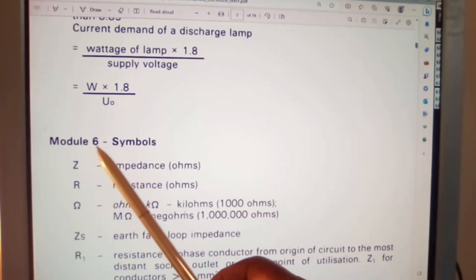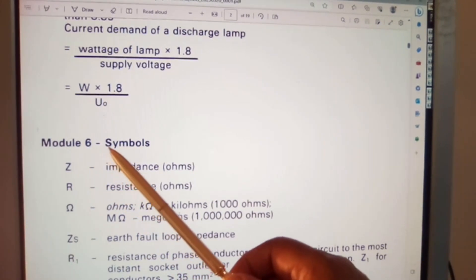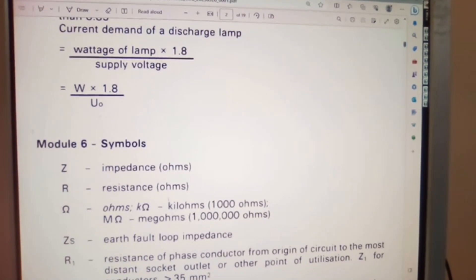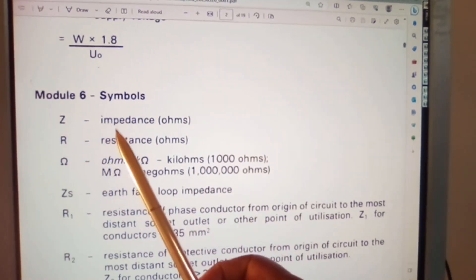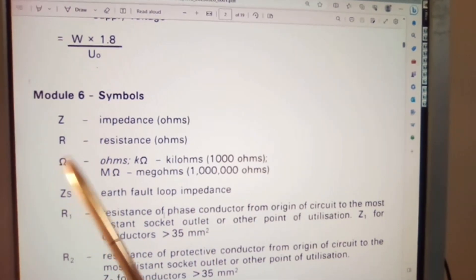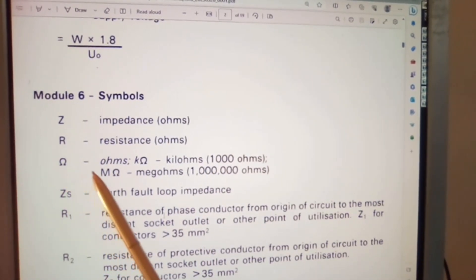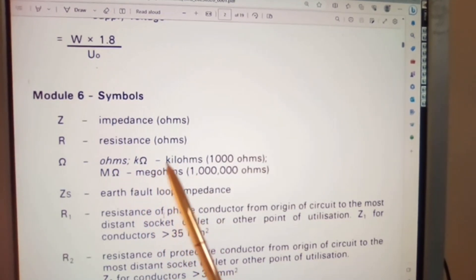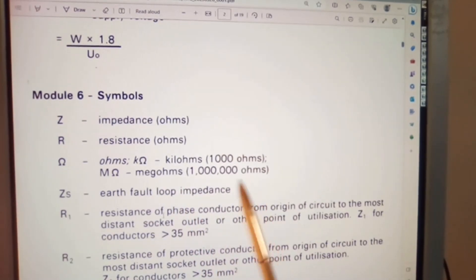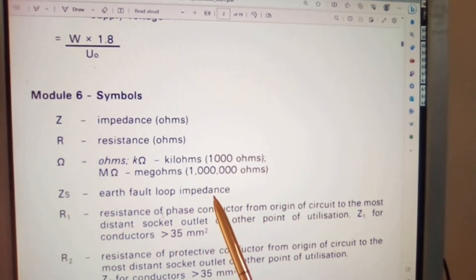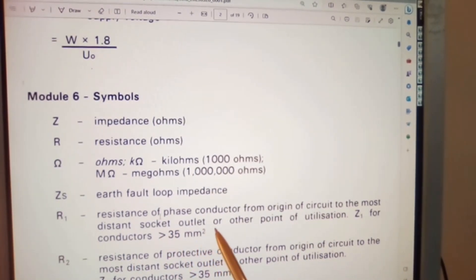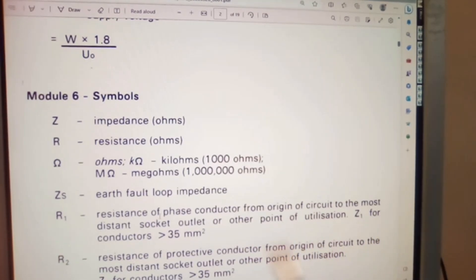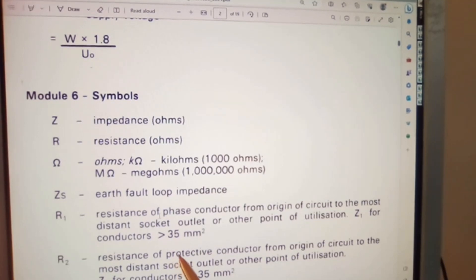Now Module 6, and again this module is only just for reference, it does not apply to any particular or specific unit. It is purely for reference only. Z equal impedance in ohms, R equals resistance in ohms, omega equals ohms, kilohms, megohms is 1 million ohms. Zs, earth fault loop impedance. R1, resistance of phase conductor from origin of circuit to the most distant socket outlet or other point of utilization for conductors greater than 35 millimeters square.